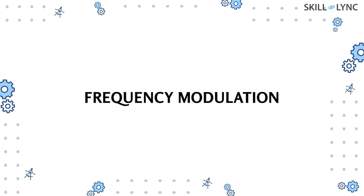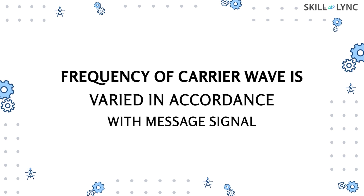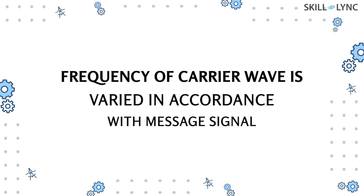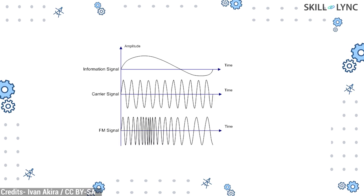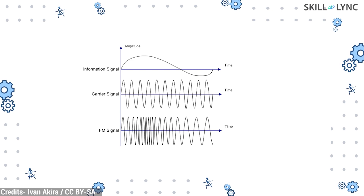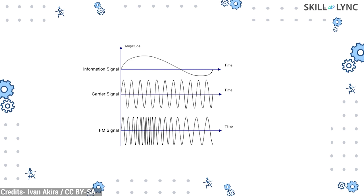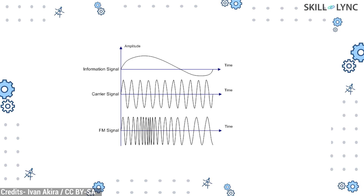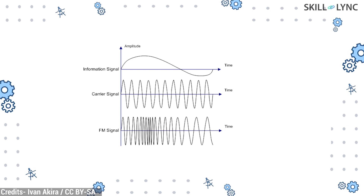Next, we'll talk about frequency modulation. As the name suggests, in frequency modulation the frequency of the carrier wave is varied in accordance with the message signal. Comparing the three graphs again: the first is the message signal, the second is the carrier signal, and the third is the frequency modulated signal. In the third graph, we can observe that the frequency of the modulated wave is high where the amplitude of the message signal is high, and the frequency of the modulated signal is low where the message signal is low.